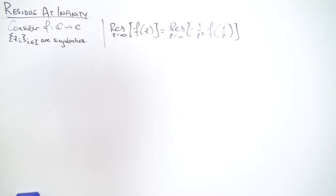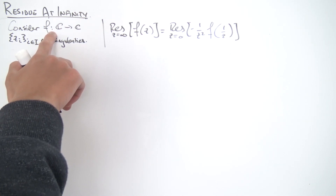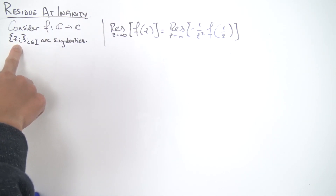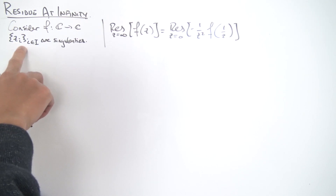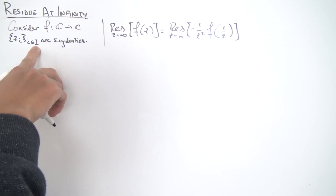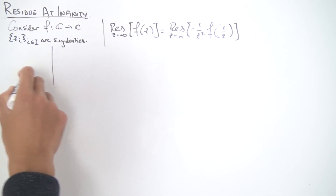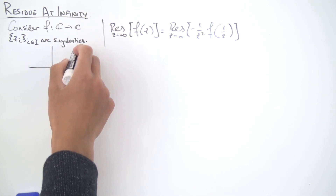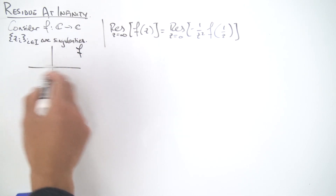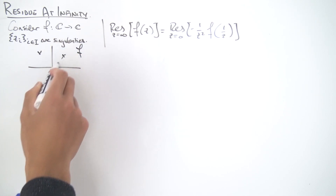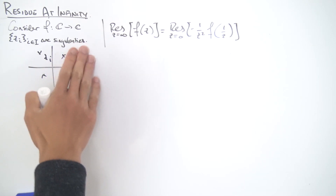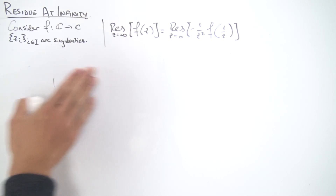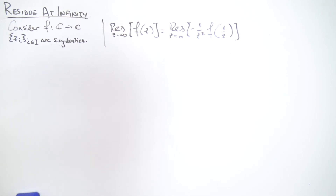First, let's take a look at how our normal residues are defined. Consider this complex function f, and we have a set of singularities — complex numbers z_i where i is an element of some index set. If you imagine the complex plane, our function f is holomorphic everywhere except for a couple of points which are our singularities z_i. The question is: how do we usually define the residue at each of those singularities?